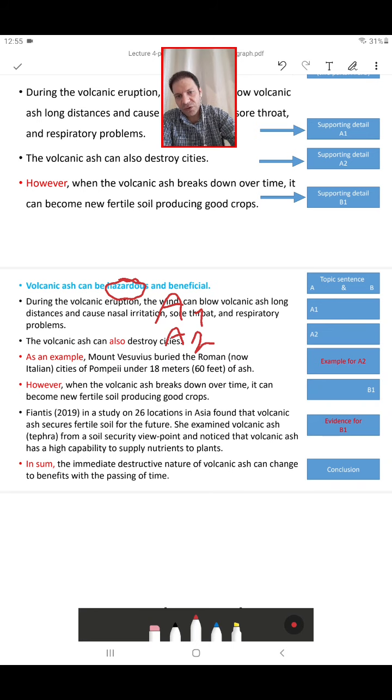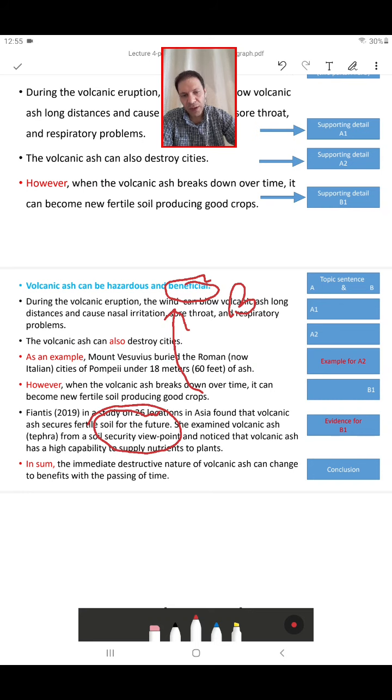But then I will go to B. B is beneficial, so this is B1. I want to give evidence, an example for this one. Then I can refer to another article. This is one evidence for that. And then finally, in conclusion, the immediate destructive nature of volcanic ash can change to benefit with the passing of time. This is a perfect paragraph.